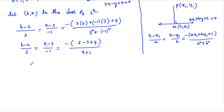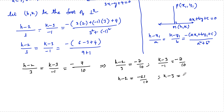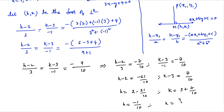So we can write (h - 2)/3 = (k - 3)/(-1) = -(6 - 3 + 4)/10 = -7/10. Therefore h - 2 = -21/10 and k - 3 = 7/10, giving h = 2 - 21/10 = (20 - 21)/10 = -1/10, and k = 3 + 7/10 = (30 + 7)/10 = 37/10.